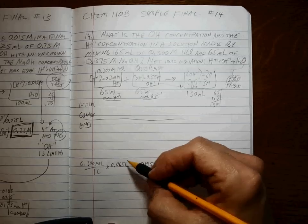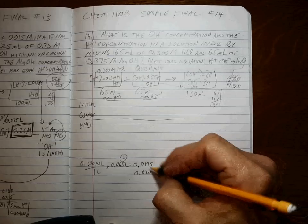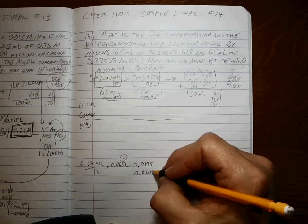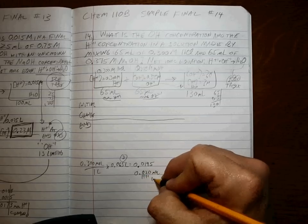0.3 times 0.065 is 0.0195. We're going to round early to 0.020. That's the moles of H-plus initial.